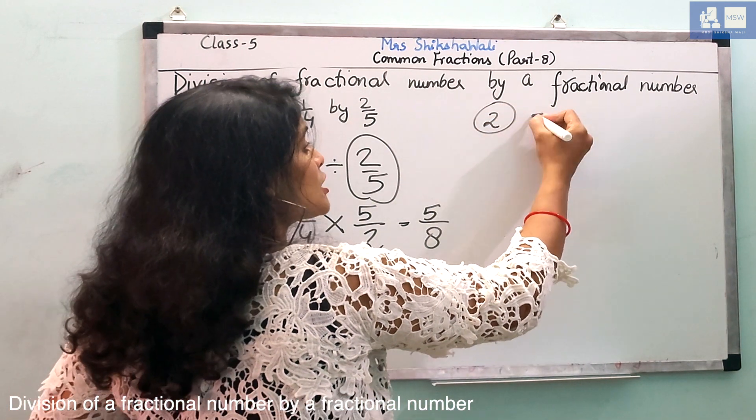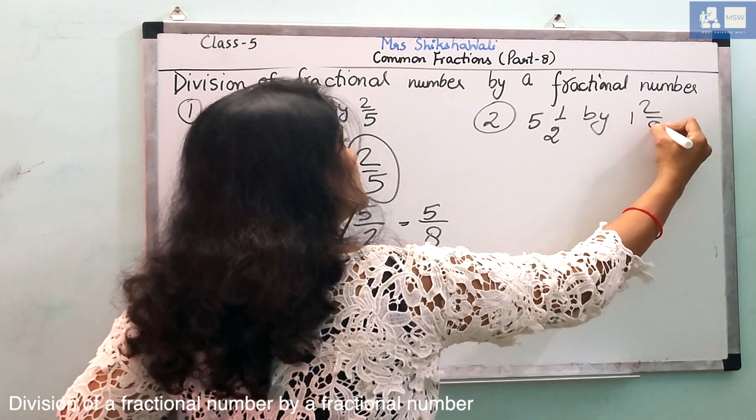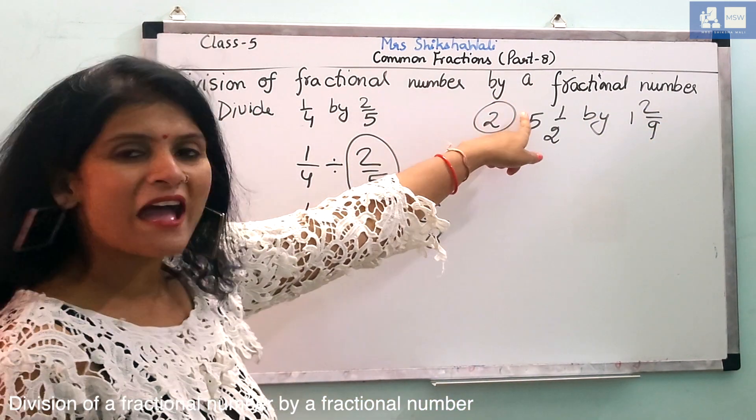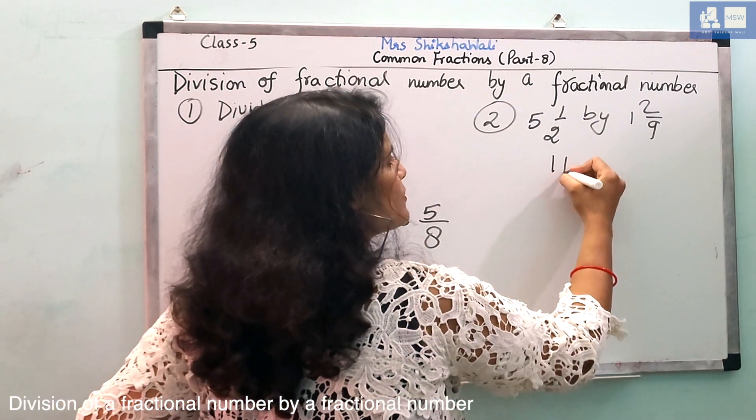Now, if I want to ask you two mixed fractions, then what will we do? First, we will convert them in common fractions. We will convert them 5 to 2, 10 plus 1, 11 by 2.